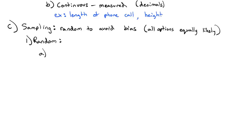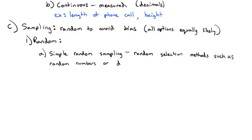The first random sampling method is what we call simple random sampling. Simple random sampling is random selection methods such as random numbers, or drawing out of a hat. This is the idea of I assign everybody a number, and I pick a bunch of random numbers, and those people are included in my survey.